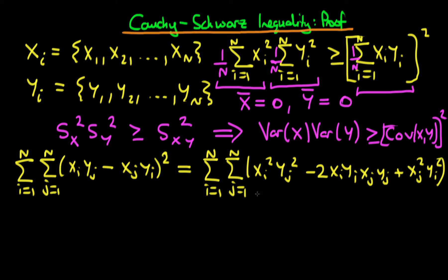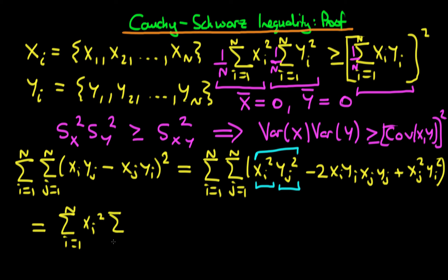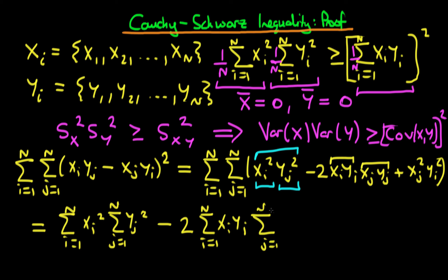We notice that some of these terms inside the parenthesis depend solely on i and others depend solely on j. For example, the xi squared only depends on i, whereas the yj squared only depends on j. Because of that, we can separate out each term into its explicit i and j dependence. Doing that, this whole expression equals the sum from i equals 1 to n of xi squared, times the sum from j equals 1 to n of yj squared, minus 2 times the sum from i equals 1 to n of xi times yi, times the sum from j equals 1 to n of xj times yj.